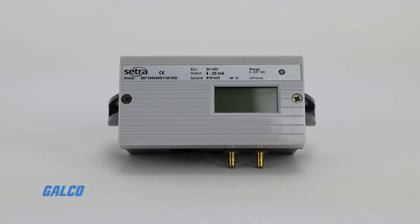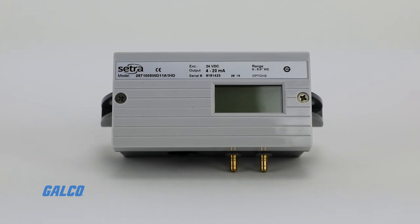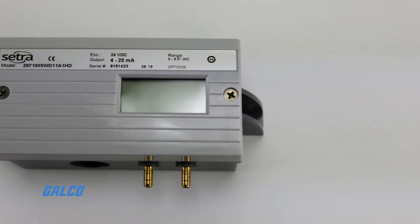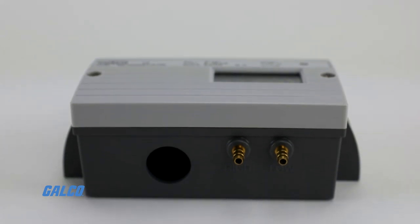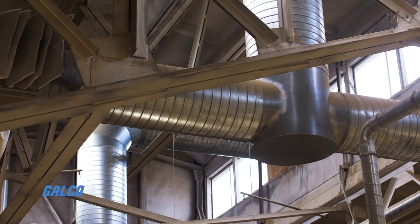Cetra's model 267 is a highly configurable multi-range low differential pressure transducer designed for HVAC systems.